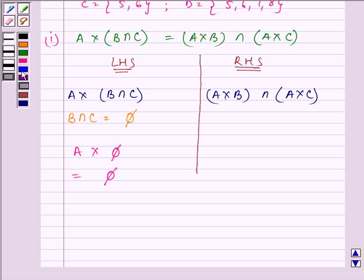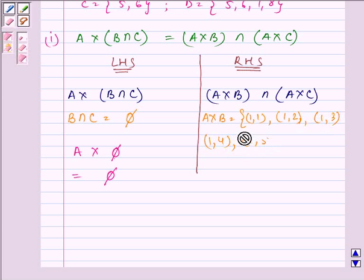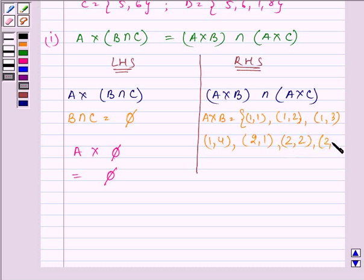Proceeding on to right hand side. First, we need to have A × B. That will be ordered pairs: (1, 1), (1, 2), (1, 3), (1, 4), (2, 1), (2, 2), (2, 3), (2, 4).